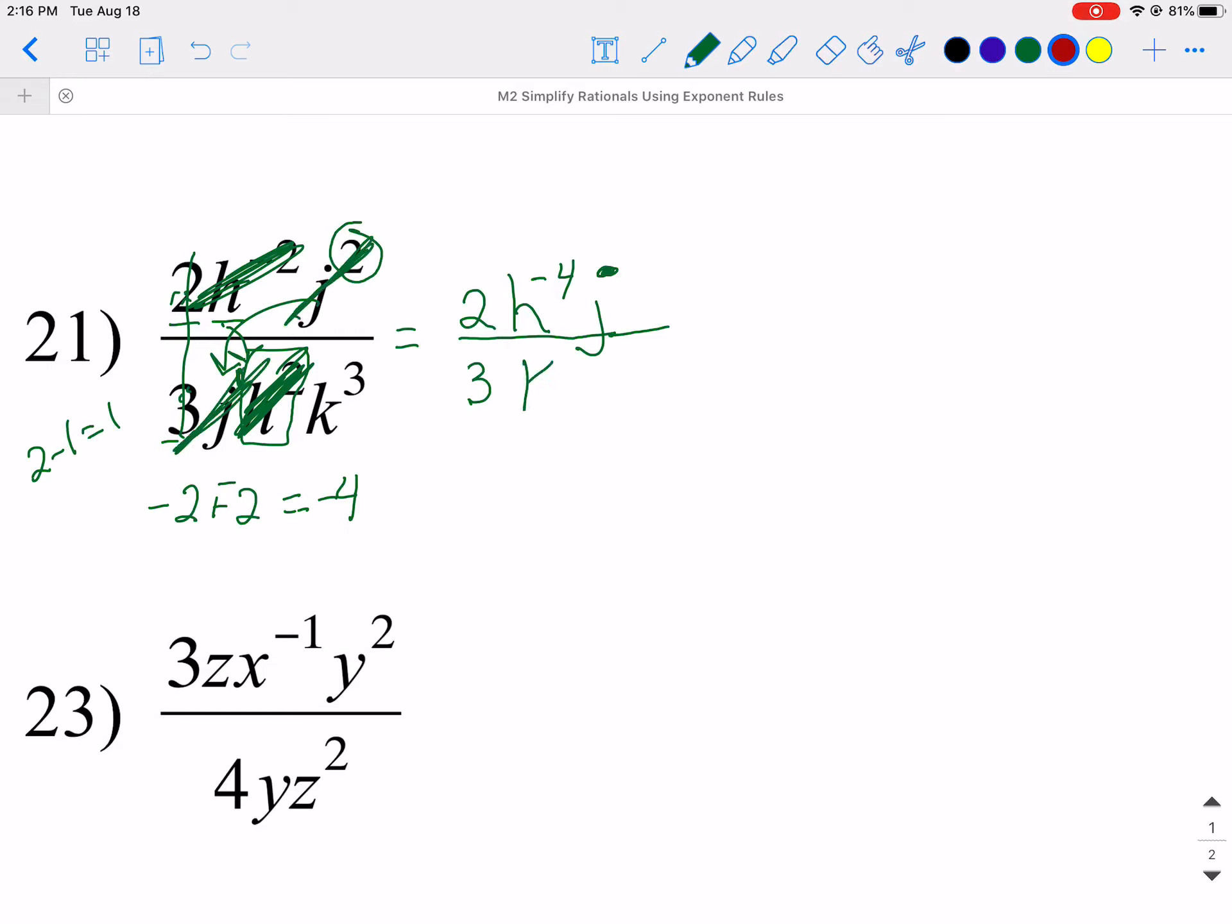There's no k up top, so I'm just going to bring my k³ over. Now I have to get rid of my negative exponents. So I'm going to copy my numbers, two-thirds. Looking at my h negative 4, I know that the negative causes h to go to the bottom. Lose the negative sign, and I keep my exponent. My j remains up top, and my k remains on the bottom. So there you go. Pretty cool, huh? I love math.